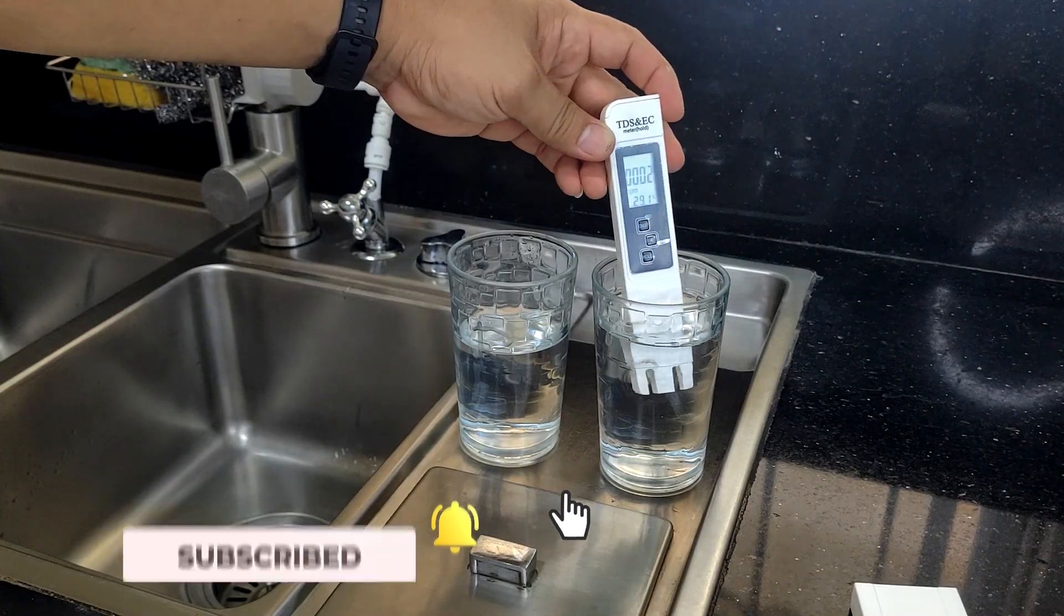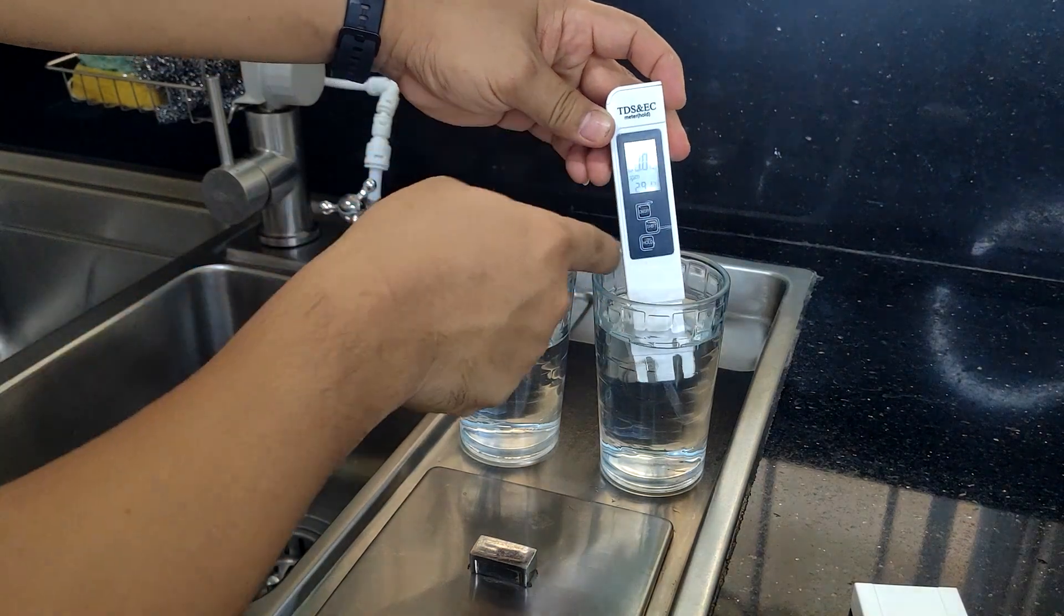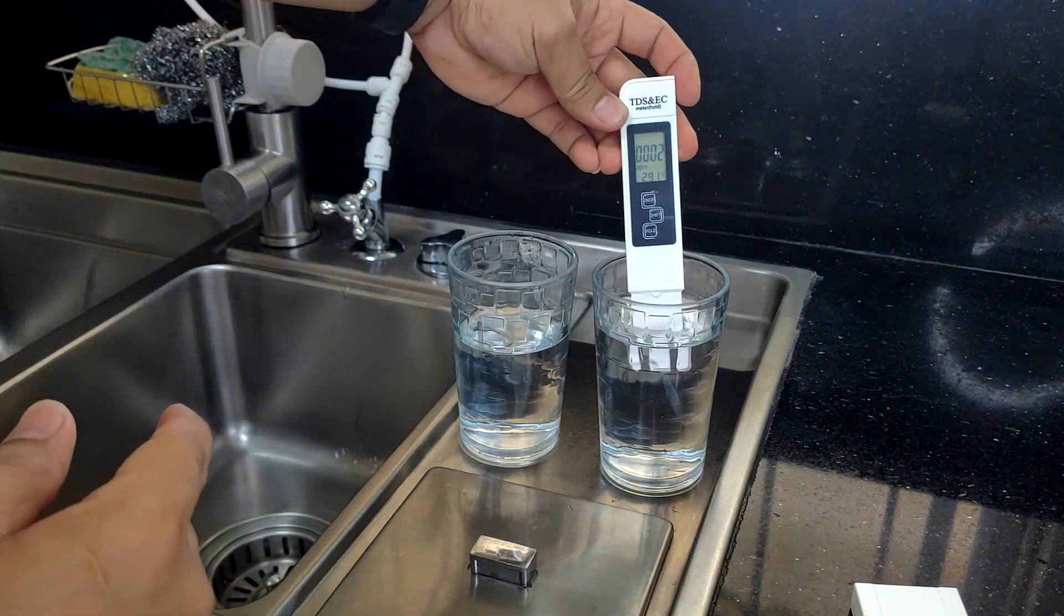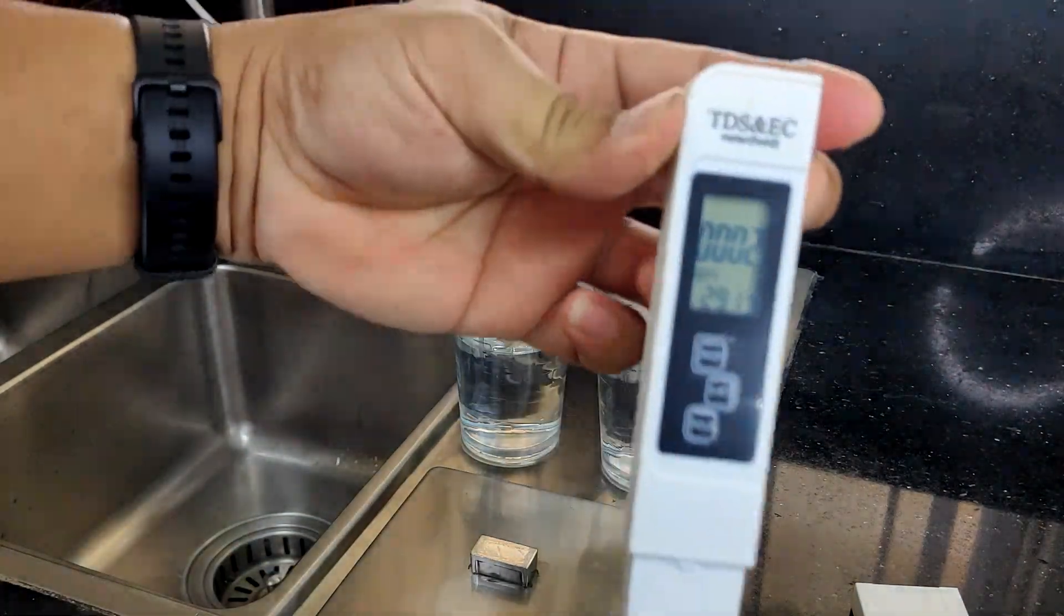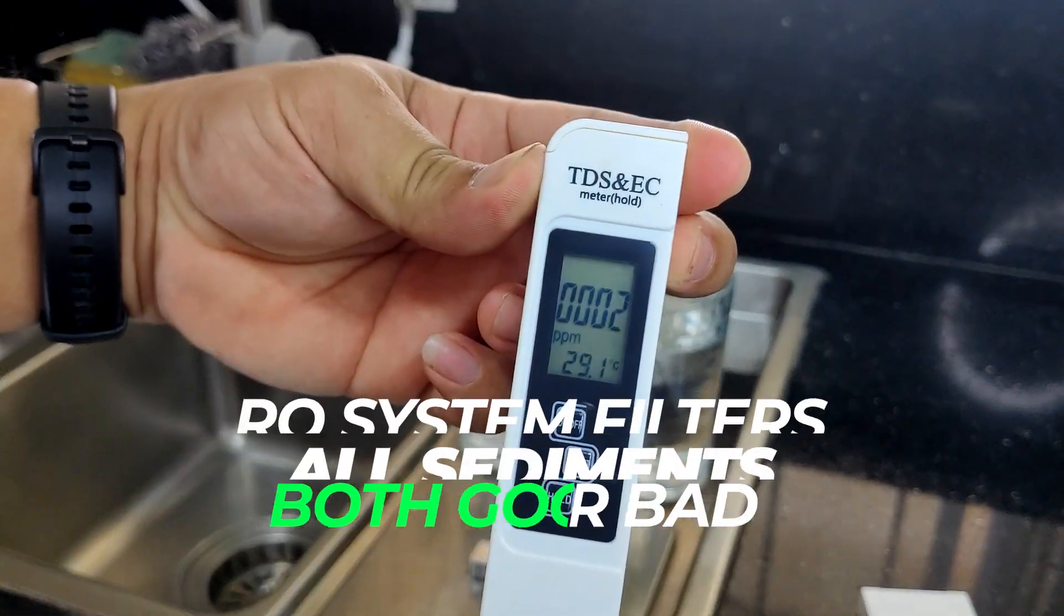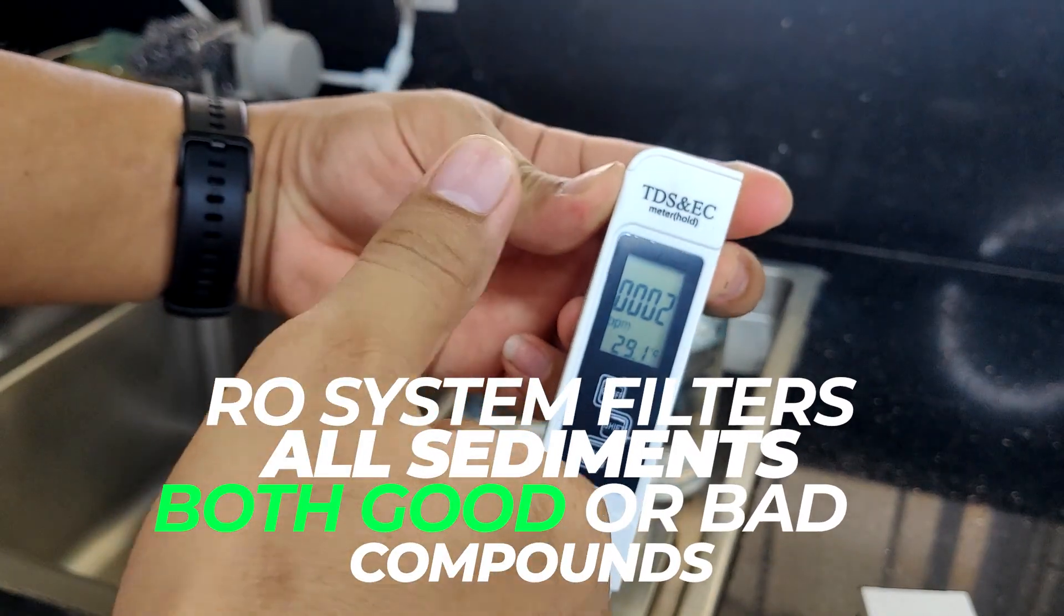Now on the clean water. It has dropped a lot to 2 ppm, which means my RO system is working as it should.